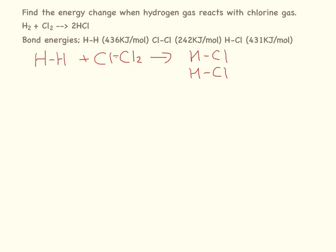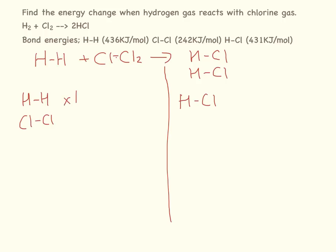Draw a line down the middle and make a list of all the bonds on either side. On the reactant side we have one H-H bond and one Cl-Cl bond. On the product side we have two H-Cl bonds — one for each HCl molecule. Now we've worked out what type of bonds and how many bonds we have.